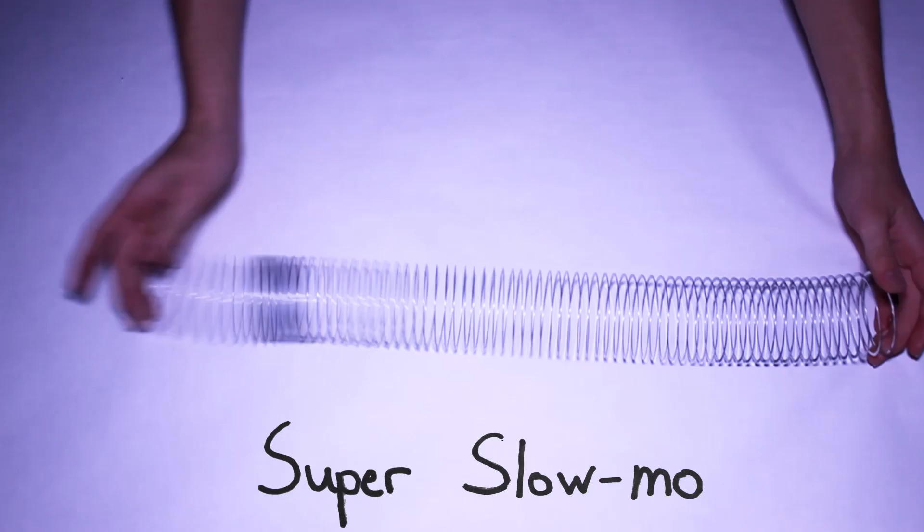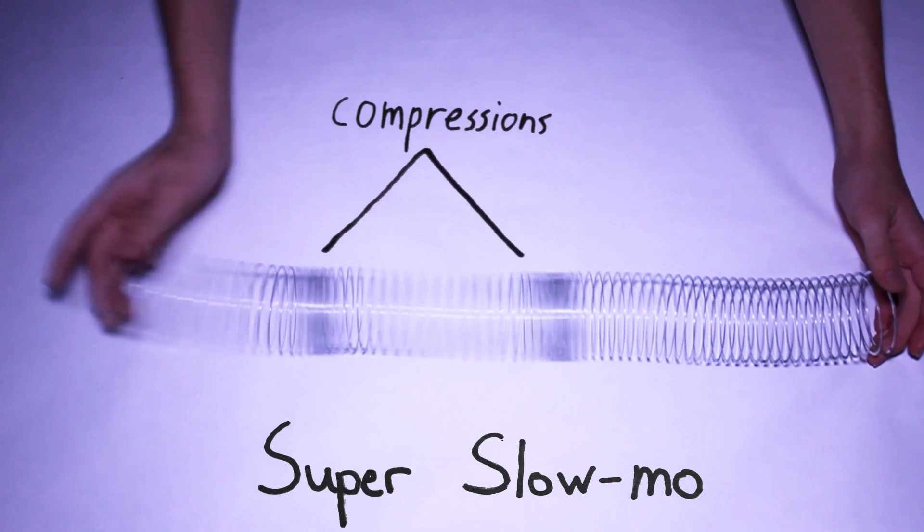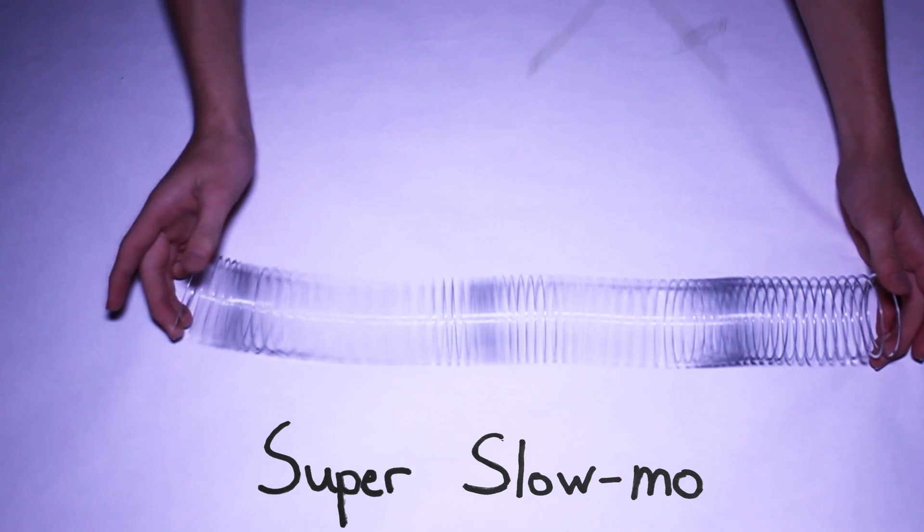A series of pushes and pulls results in sections of the slinky that are compressed, called compressions, and sections that are spread out, called rarefactions. It's the same way with sound traveling through the air. A push or pull on one molecule results in a push or pull on the next, and so on.